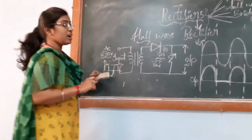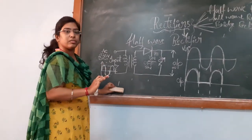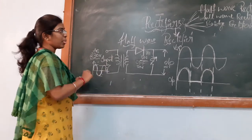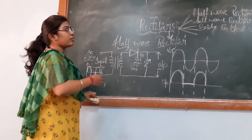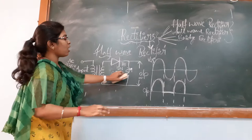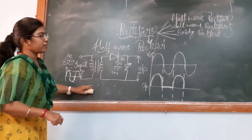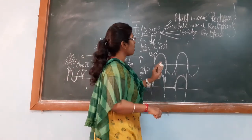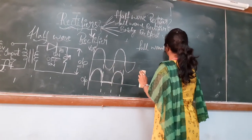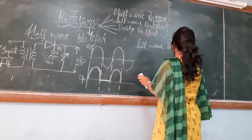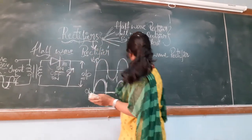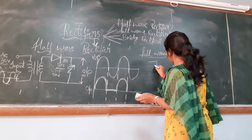The half wave rectifier is used in certain devices where we require only half of the current — that means only a certain limit of current. While coming to the full wave and bridge rectifier, a full wavelength appears at the output section and the full current is available. This is the difference between half wave and full wave. Now let us look at the full wave rectifier circuit diagram.